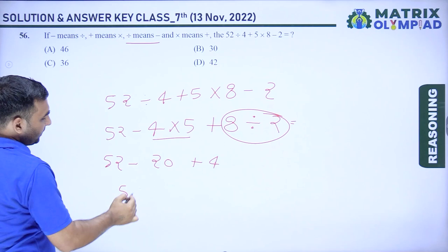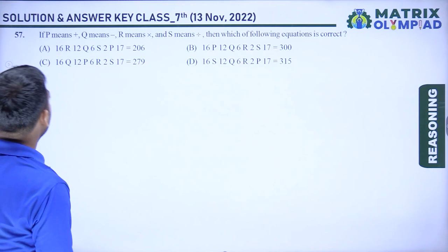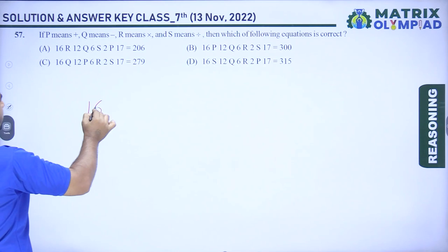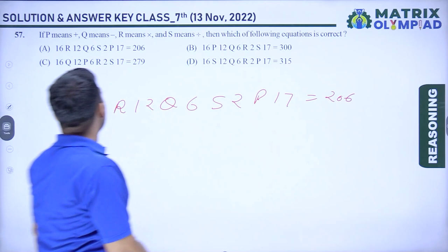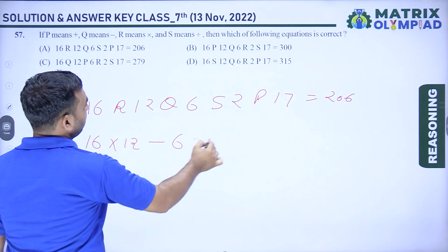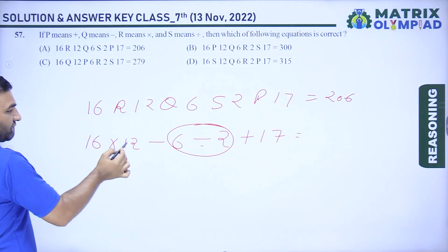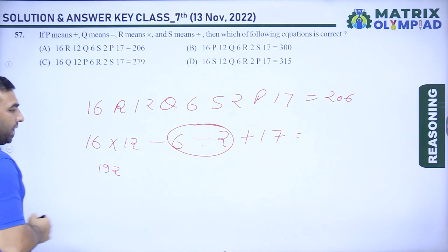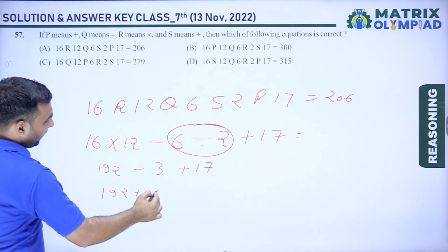Question 57: P means +, Q means −, R means ×, S means ÷. Evaluating the expression with substituted operators: 16 R 12 Q 6 S 2 P 17 = 16 × 12 − 6 ÷ 2 + 17 = 192 − 3 + 17 = 206. Option B is correct.